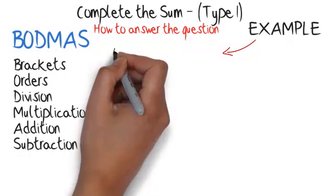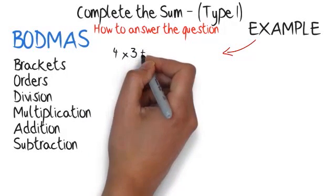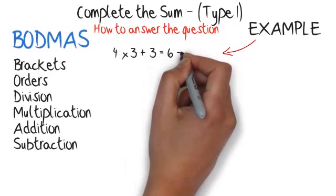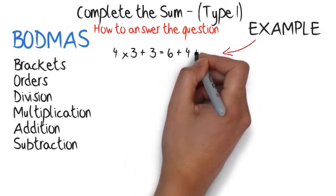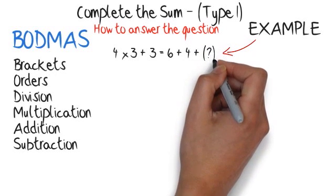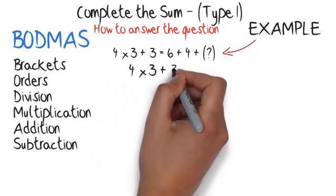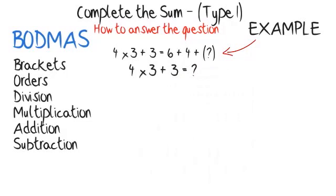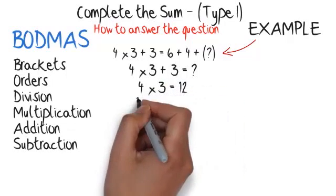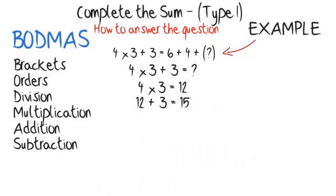Example: 4 multiplied by 3 plus 3 equals 6 plus 4 plus ___. One side of the equation will always be complete. In this equation the left-hand side is complete. Use this side to work out the answer you'll need for the other side. Using BODMAS, answer the multiplication first: 4 multiplied by 3 equals 12, then add the 3: 12 plus 3 equals 15.